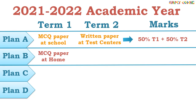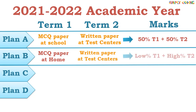Plan B is the situation where, due to COVID, schools do not open in November–December. In that case, the board will allow the term 1 exam to be done from home. It assumes the situation improves by March and you will be able to go to test centers for the term 2 exam. But now the weightage of term 1 will be reduced and term 2 will increase.